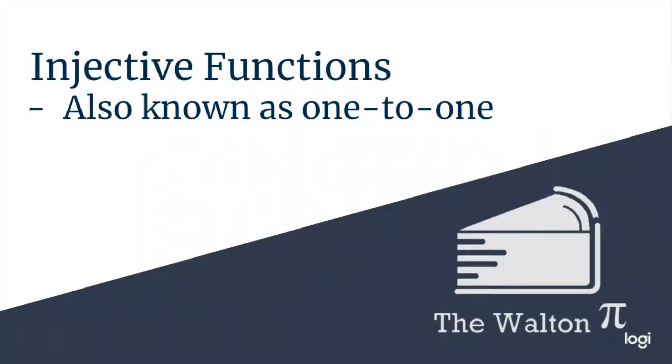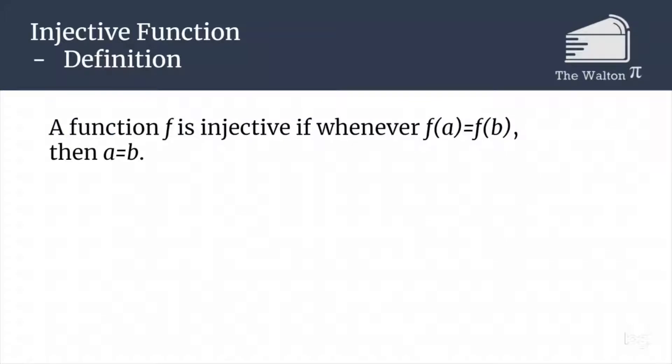Our first type of function that we are going to be talking about are what are called injective functions, which are sometimes called one to one functions. A function is injective if any time f(a) equals f(b), then a is equal to b.